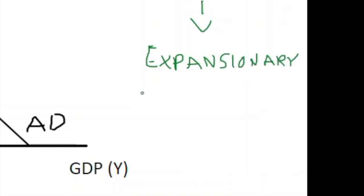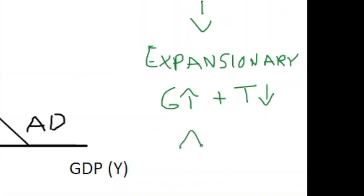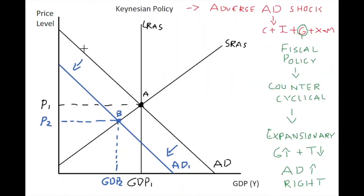Expansionary fiscal policy includes government spending increasing and/or taxes reducing. A combination of these policies, if large enough and if the fiscal multiplier is large enough, would tend to increase aggregate demand. We know from previous videos that an increase in aggregate demand is a rightward shift in the aggregate demand curve.